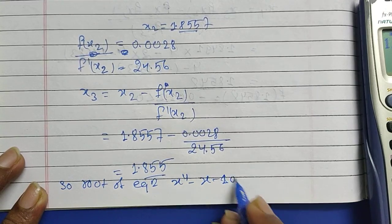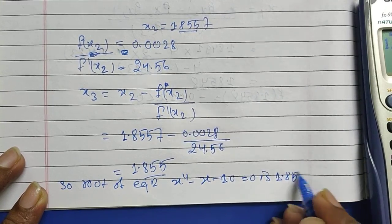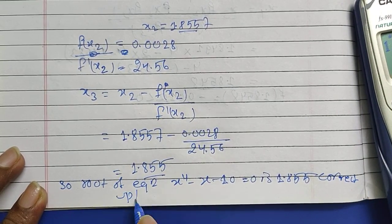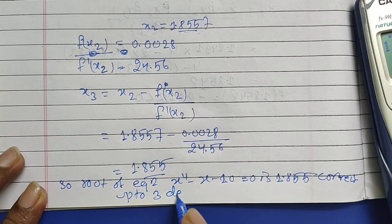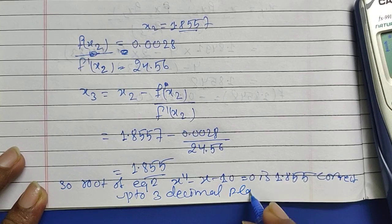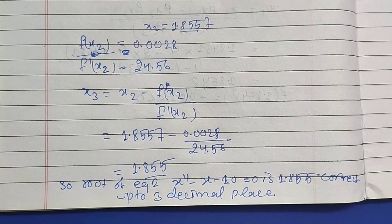So we can write here the root of equation x^4 - x - 10 = 0 is 1.855, which is correct up to 3 decimal places. And this was the Newton-Raphson method, and I hope this video was helpful to all of you guys.